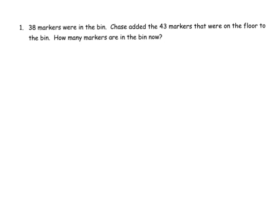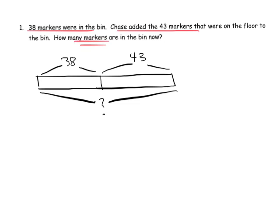The first problem: 38 markers are in a bin. Chase added the 43 markers that were on the floor to the bin. How many markers are in the bin now? One way to model this with a tape diagram is the part-part-whole model — here's our 38 markers in the bin, here's the 43 markers Chase added, and here is our question mark for the whole. Students should recognize this picture suggests addition is what we need to do.